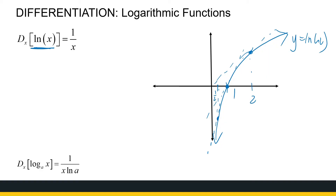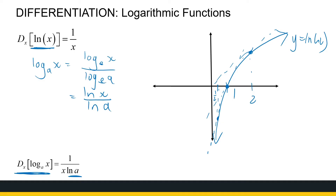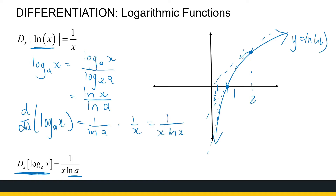At the bottom, the derivative of the logarithmic function log base a of x is 1 over x times ln a. I'll show you where that comes from because it's quick and easy from ln x. If I've got log base a of x, logarithmic laws tell us that's the same as log of x over log of a — I can change the base to whatever I want. Making the base e gives ln of x over ln of a. So the derivative: the 1 over ln a is just a constant, so it's the derivative of ln x, which is 1 over x, giving 1 over x ln a. We put the x in front to avoid confusion about whether it's ln of a times x or just ln of a.